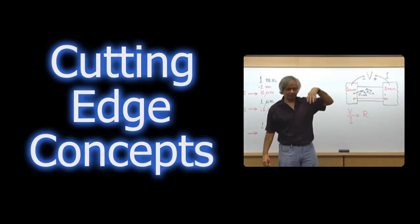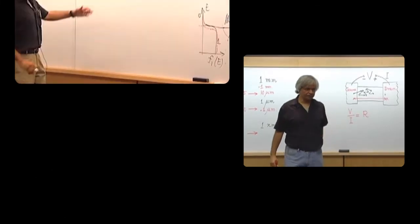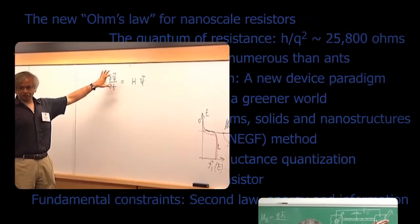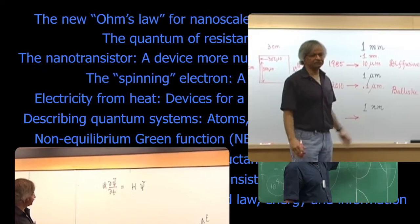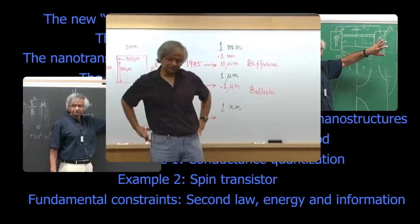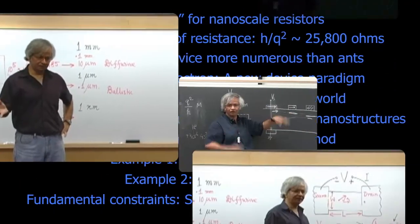Ballistic transport - it's like a bullet. This is the general time-dependent Schrödinger equation. In fact, people have even measured the resistance of a single hydrogen molecule.